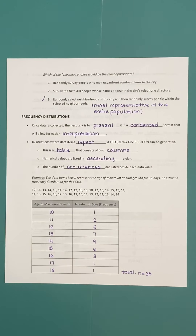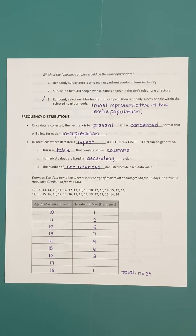In situations where data items repeat, one possible representation is a frequency distribution. A frequency distribution is a table consisting of two columns: numerical values listed in ascending order, and the number of occurrences of each data item listed beside each value. We go through the whole list of data items, determine all the different options for the repeating data items, and count how many times we see each one.